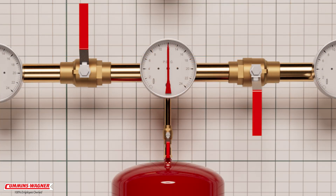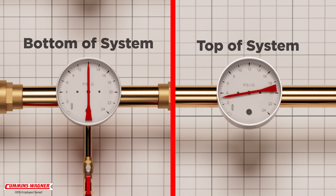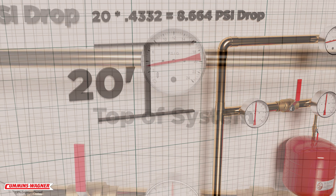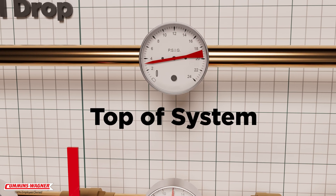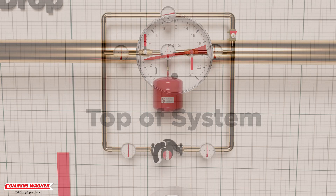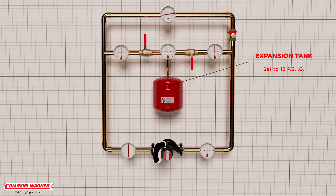The pressure on the system is set to a typical 12 psi. Note that the static pressure at the bottom of the system is not the same as the pressure at the top. In this example, 20 feet represents over 8 psi of pressure drop to get the water to the top of the system, leaving less than 4 psi at the top, even with the circulator off. When we power the circulator, it provides a delta-P, or difference in pressure.